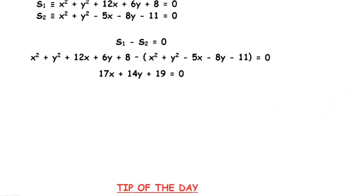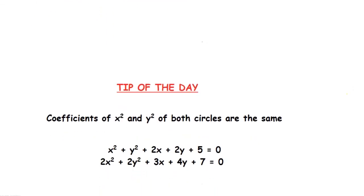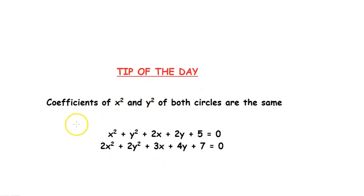Now for the tip of the day. When finding the equation of the common chord, you have to make sure that the coefficients of x² and y² are the same for both circles. If you are given a circle x² + y² + 2x + 2y + 5 = 0 and another circle 2x² + 2y² + 3x + 4y + 7 = 0,